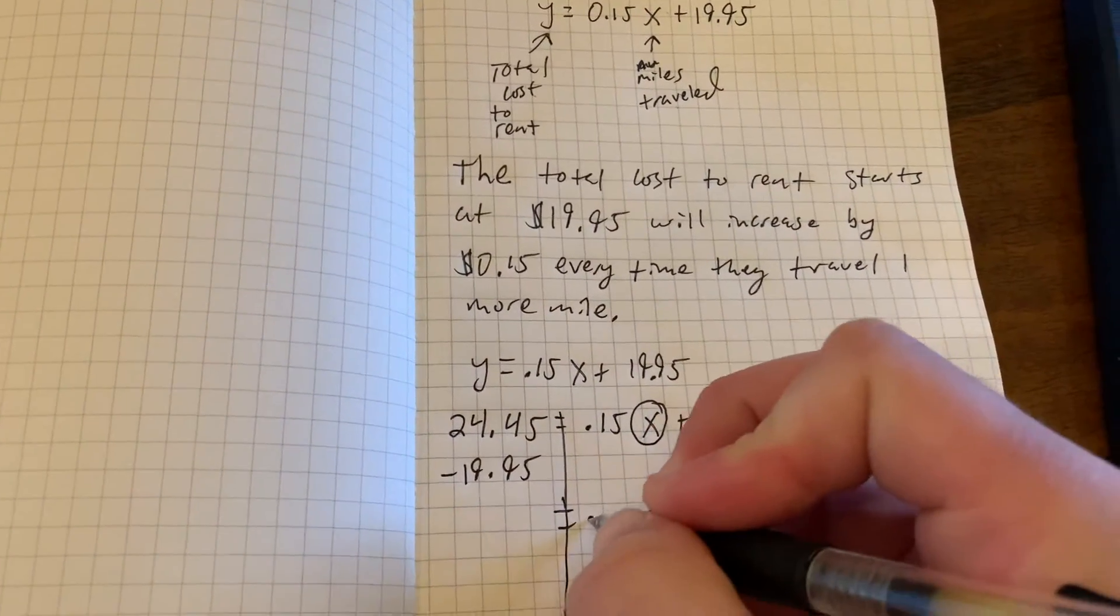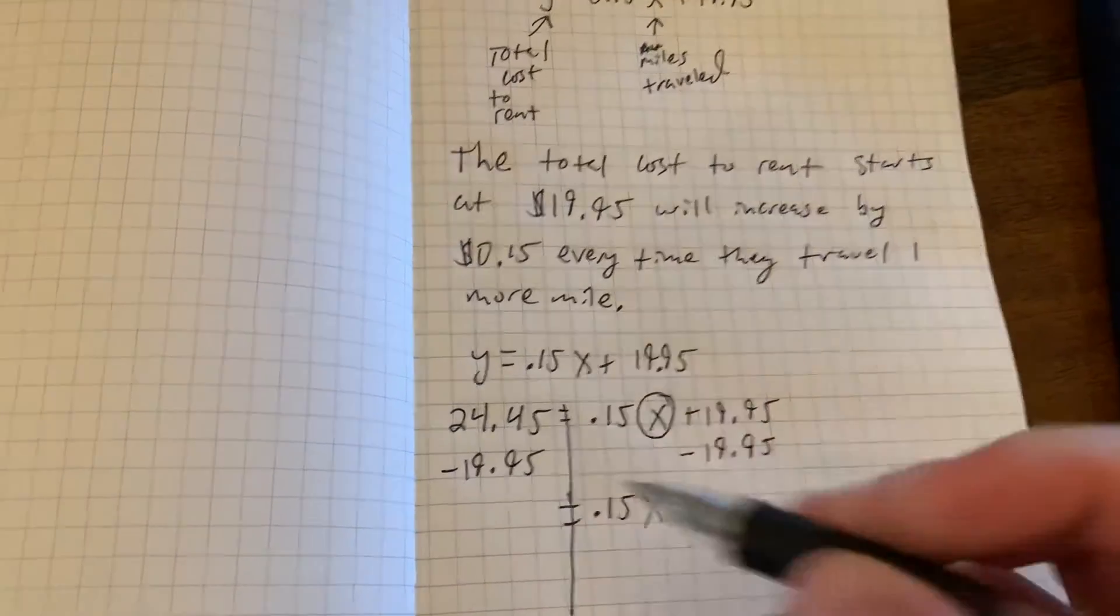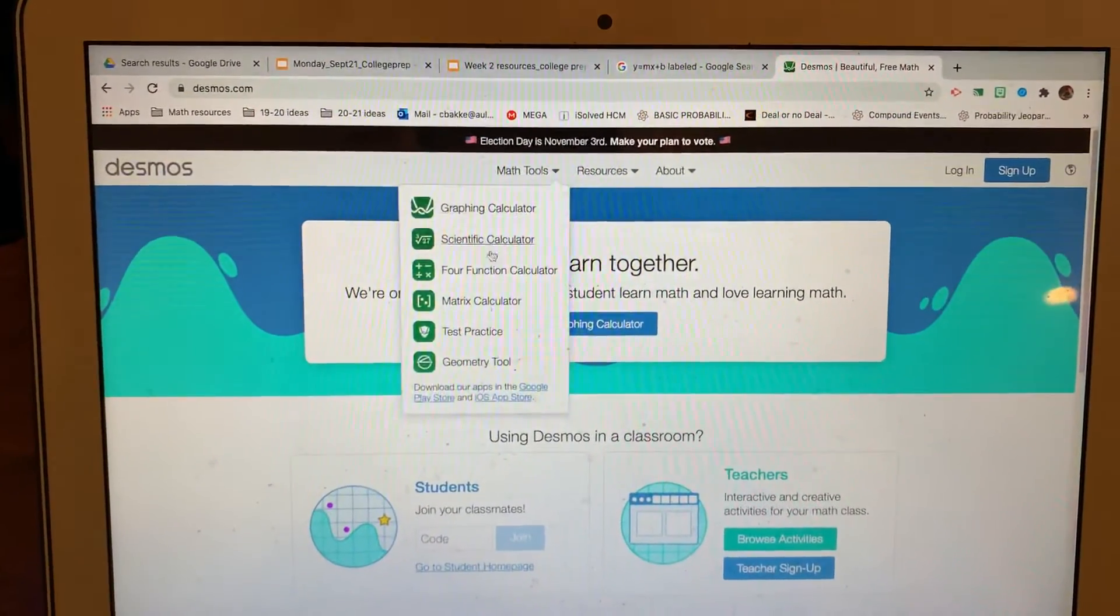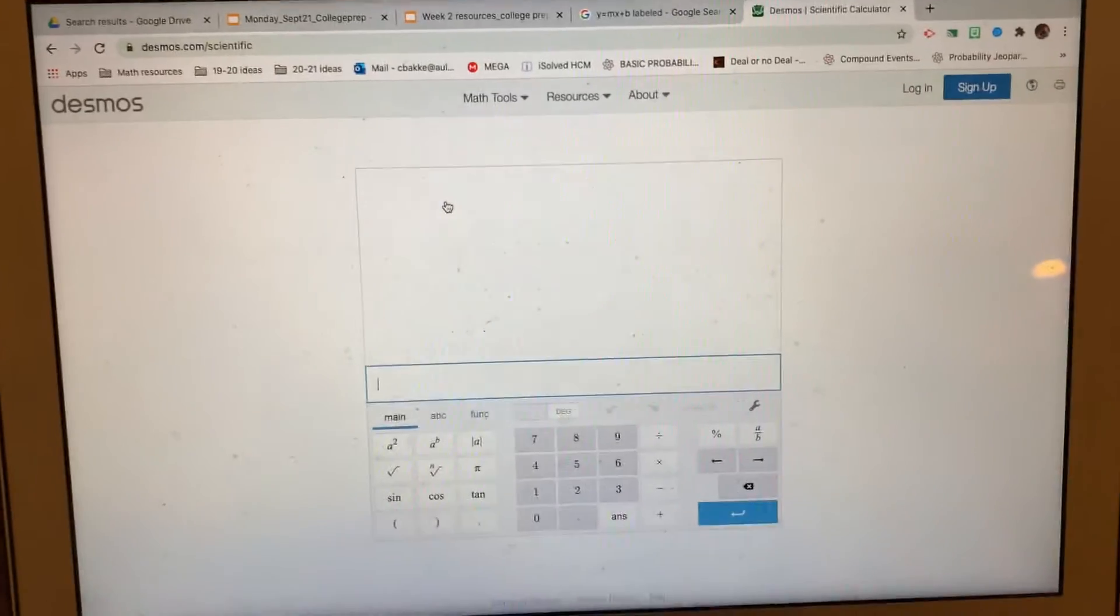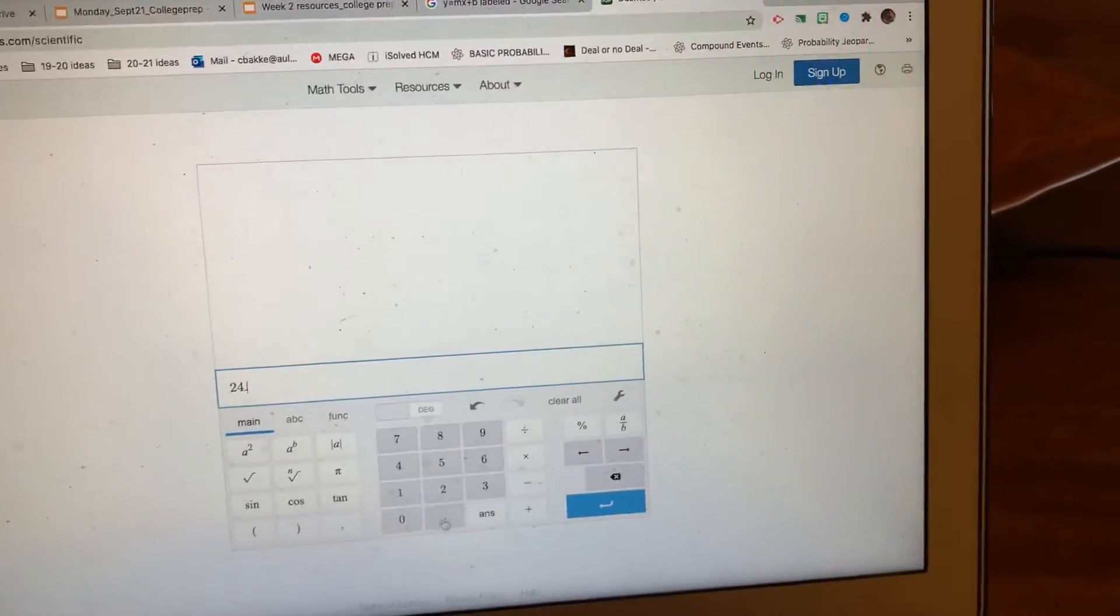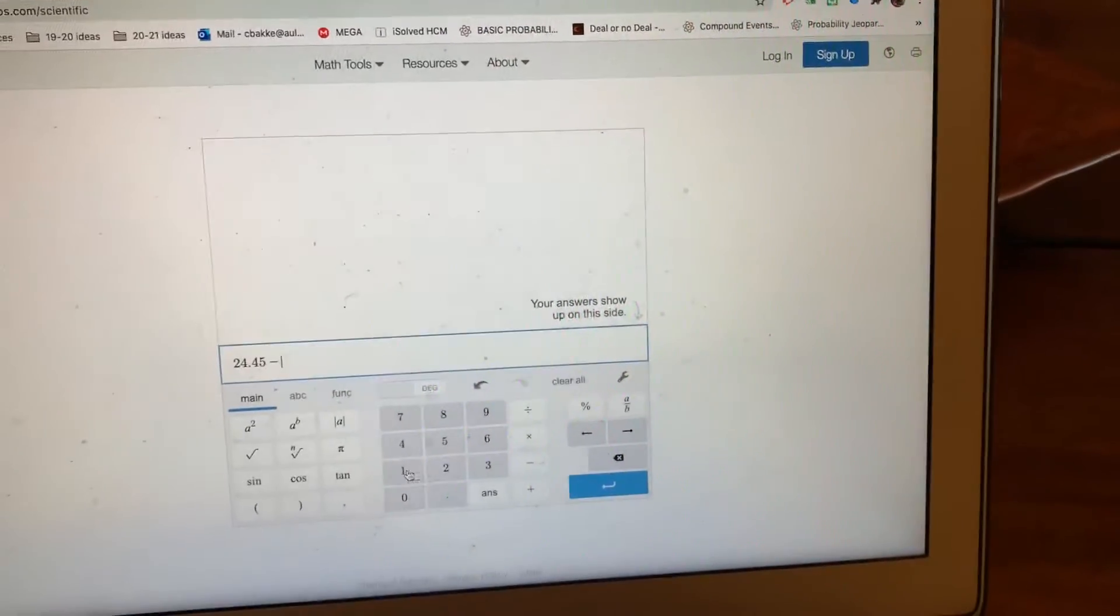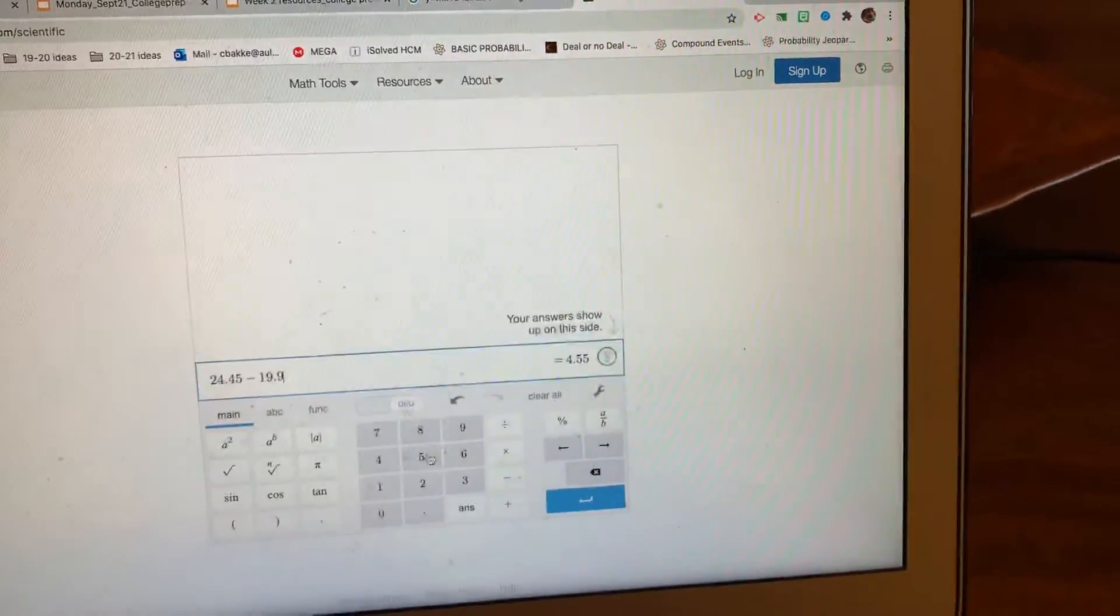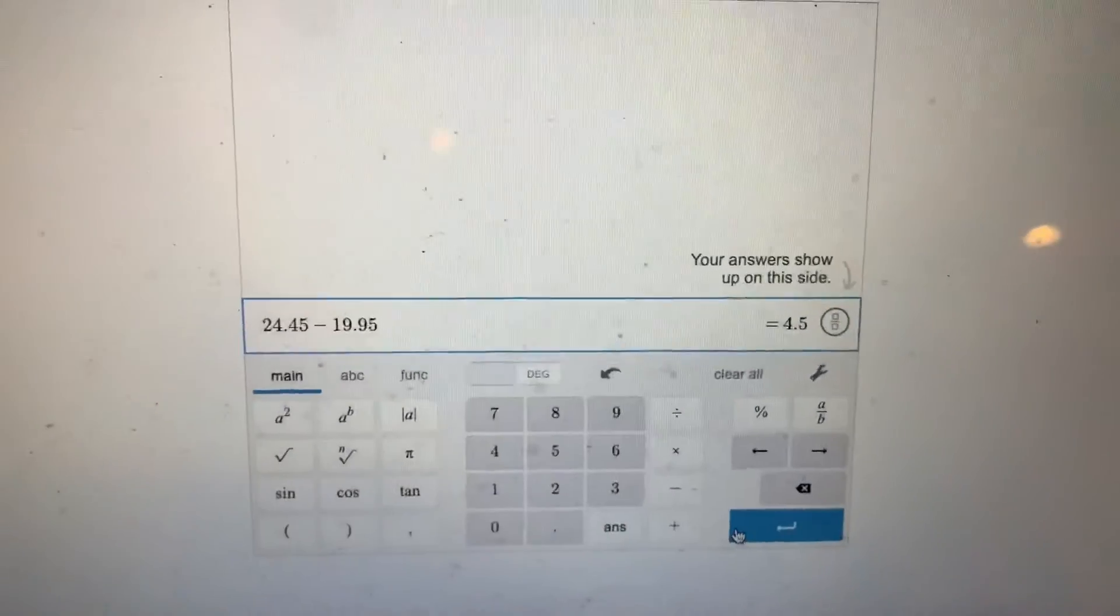So we'll end up having 0.15X over here. And then I will need to go do that subtraction. If you need, there is a Desmos calculator available to you that I will make sure there is a good link. So $24.45 minus that starting cost of the $19.95 gives us $4.5.